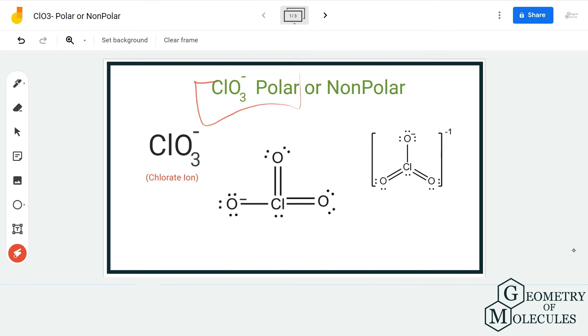It has a dipole moment which makes this ion a polar ion. That is because it is not completely symmetrical - there is asymmetry as you can see: these two are forming double bonds and this one is forming a single bond.